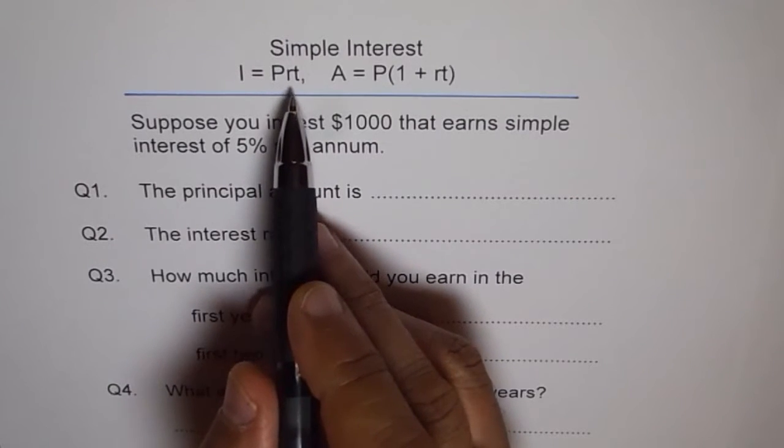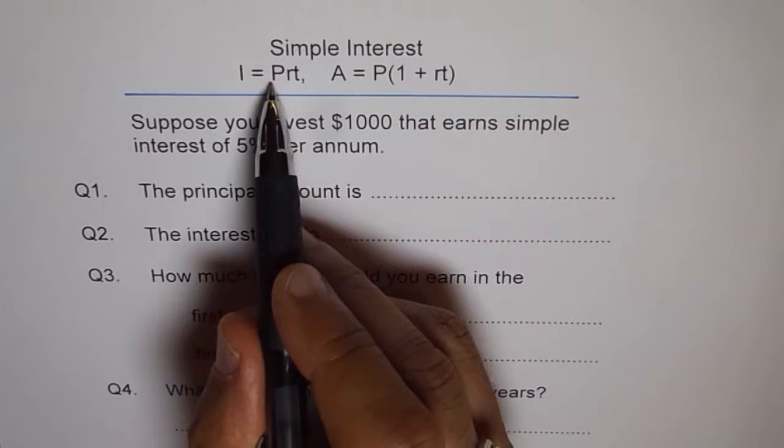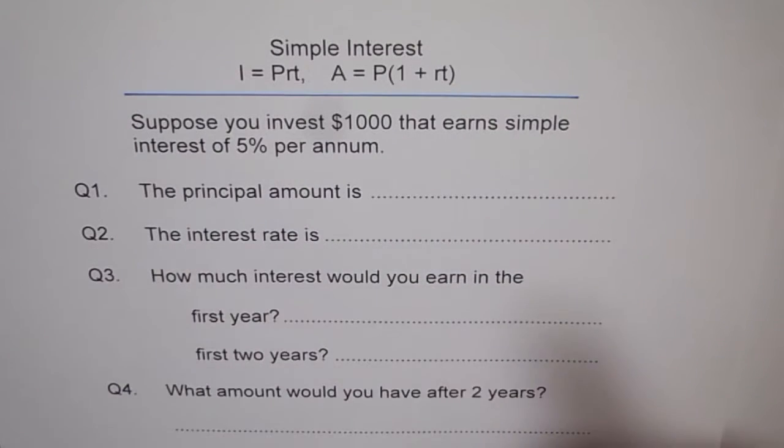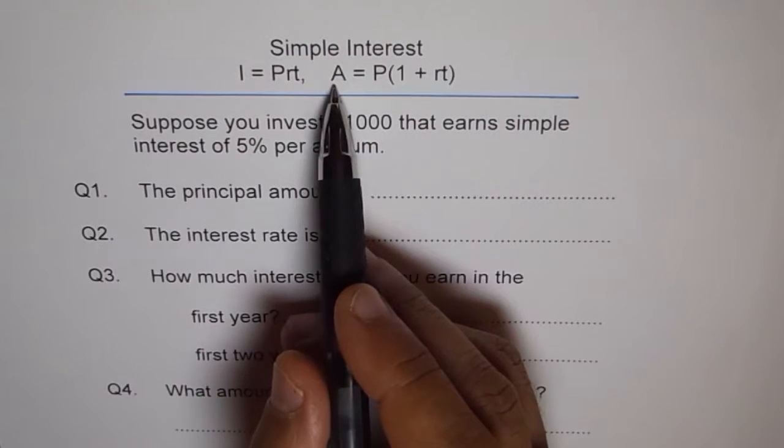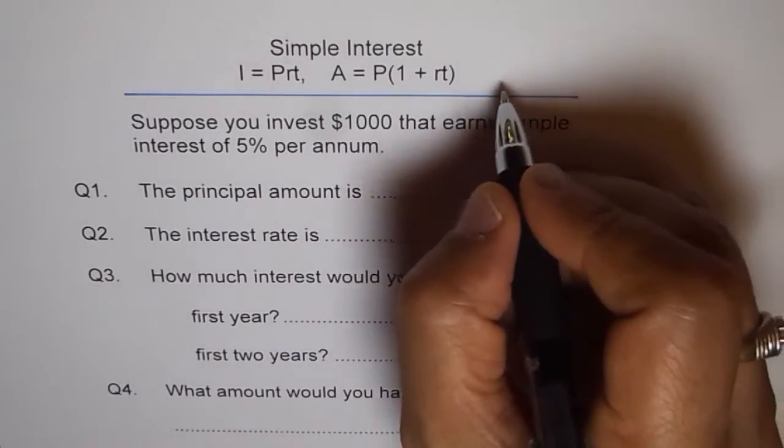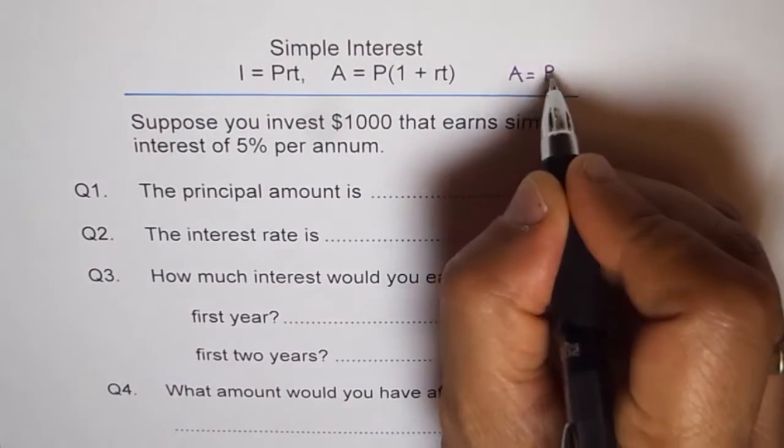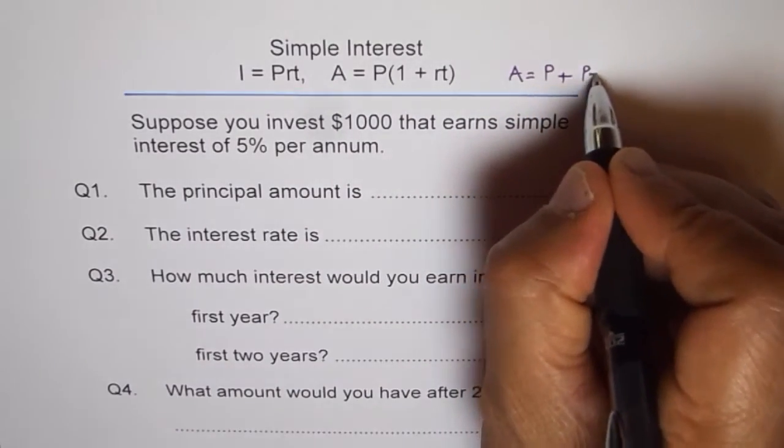Now if you invest that much of P amount and then you get interest of PRT, then at the end of the year you get your amount plus the interest. And that gives us this formula, where A says it's like combination of saying that amount equals principal invested plus interest earned, that is PRT.